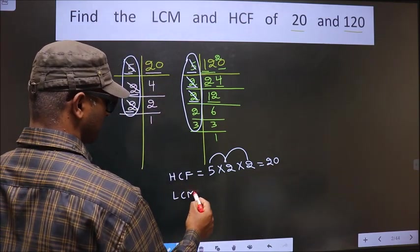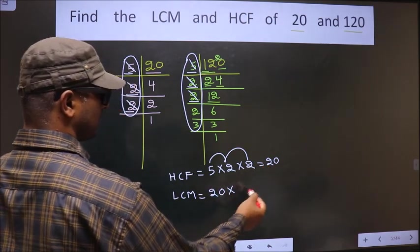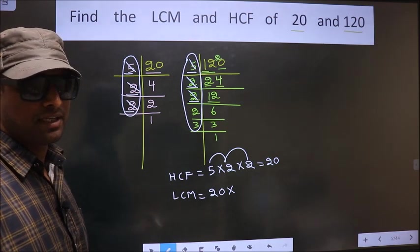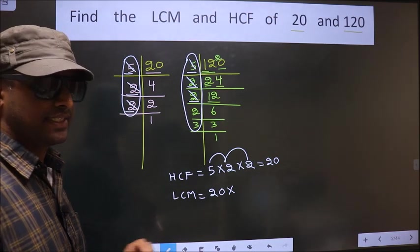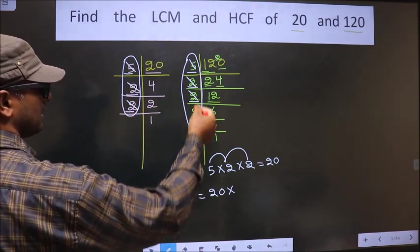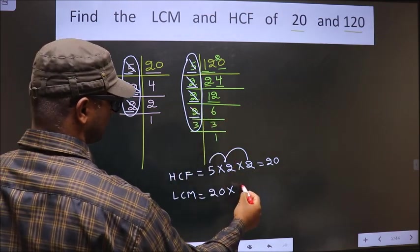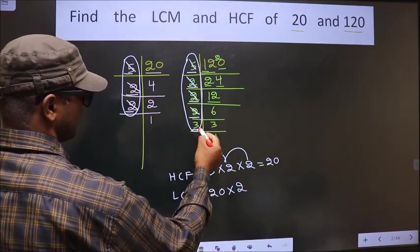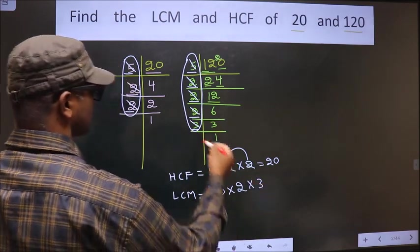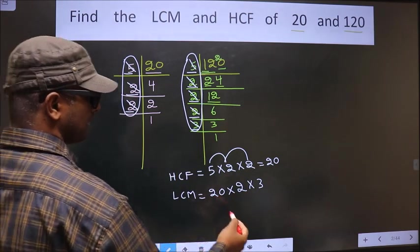Now LCM. To the HCF you should multiply by certain numbers. What numbers should you multiply? Here all the numbers are cut. So go to the other place. Here 2 is left. So you cut 2 right here. 3 is also left. So you cut 3 right here. So all the numbers are cut here also.